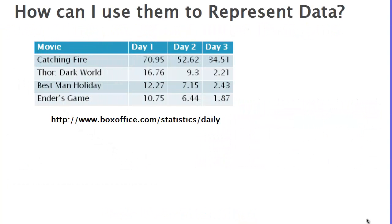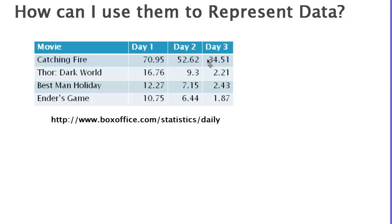So let's look at an example of how you can use matrices in your life to represent data. Let's say you were trying to track data from some November 2013 movies — this is actual data. You were tracking how many millions of dollars these movies were bringing in on the first, second, and third day after release. Catching Fire, the big Hunger Games movie, got $70.95 million on day one, $52.62 million on day two, and $34.51 million on day three.